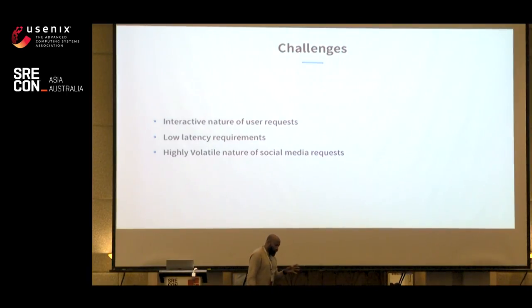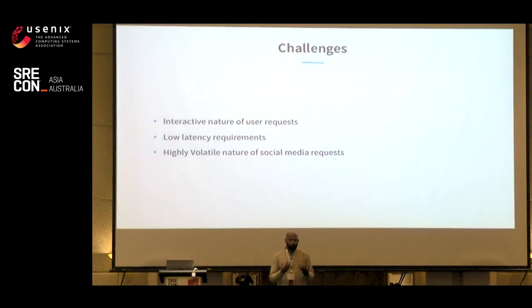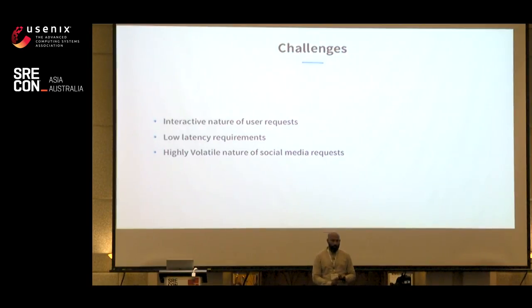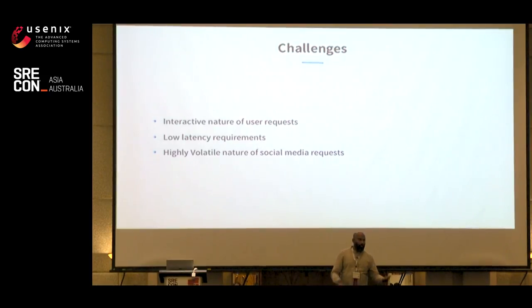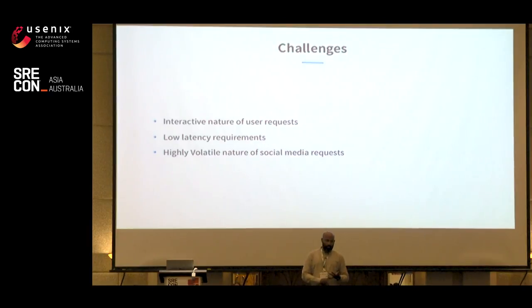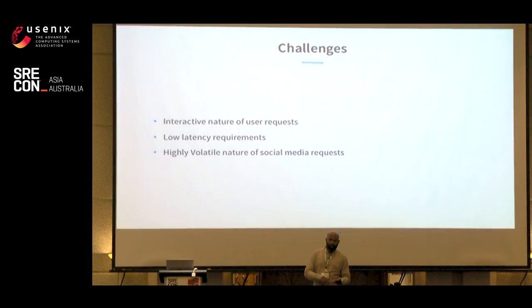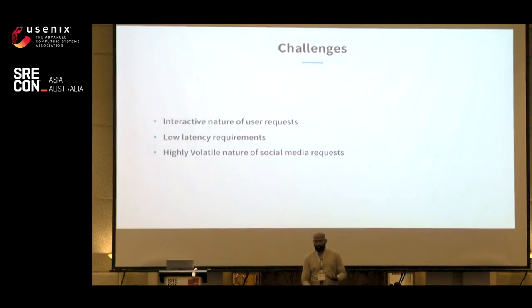The second complicated part is low latency requirements. Whenever you talk about social media, interactivity means it should be a low-latency response. When you have a lot of data, you have nodes filling out, data moving in, all of that adding load on the system — and you're supposed to answer all queries while all this background work is happening, at very low latency. The third challenge is the highly volatile nature of social media requests — a popular article or a big influencer joining the site can cause 10,000 people to suddenly start accessing the same data, leading to hot spots.